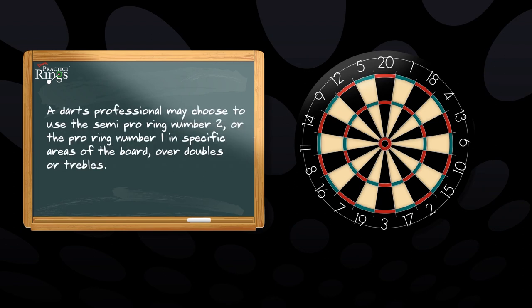A darts professional may choose to use the semi pro ring number 2 or the pro ring number 1 in specific areas of the board, over doubles or trebles.